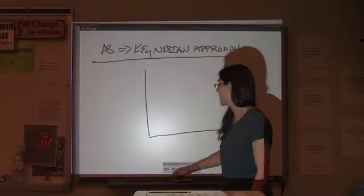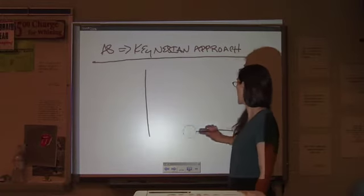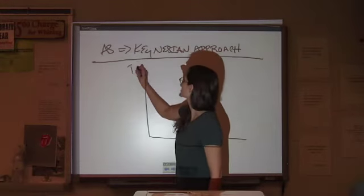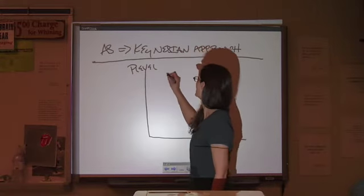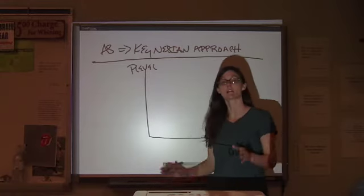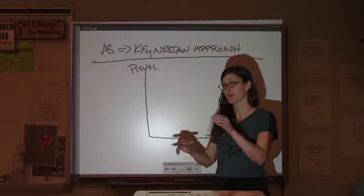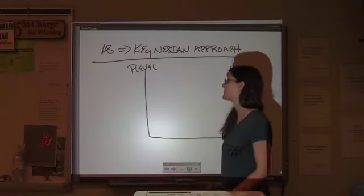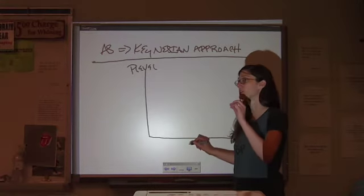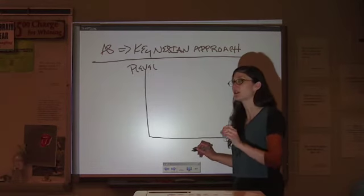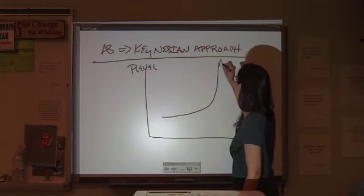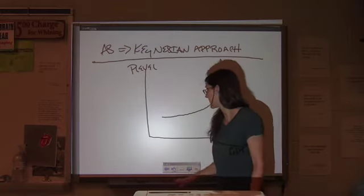So, we want our axes the same as what we had for aggregate demand, because we're going on the same graph. So, we have price level, and we have GDP. Now, aggregate demand, we said slopes down. We're going to ignore that one for just a minute and look at aggregate supply. The Keynesian model has an aggregate supply curve that looks a bit different from anything that we've done with supply so far, and there's a specific reason for this that I'll get to in just a second.